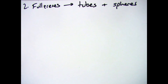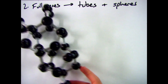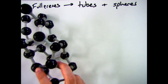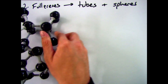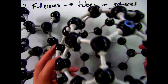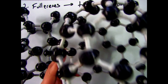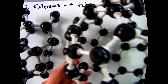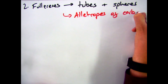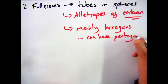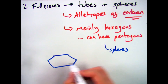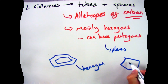Moving on to fullerenes, the first thing you need to know is there are two different types. There are tubes like carbon nanotubes, and there are spheres like Buckminster fullerenes. Both of these are allotropes of carbon and their structure is made up mainly of hexagons with the odd pentagon in there.